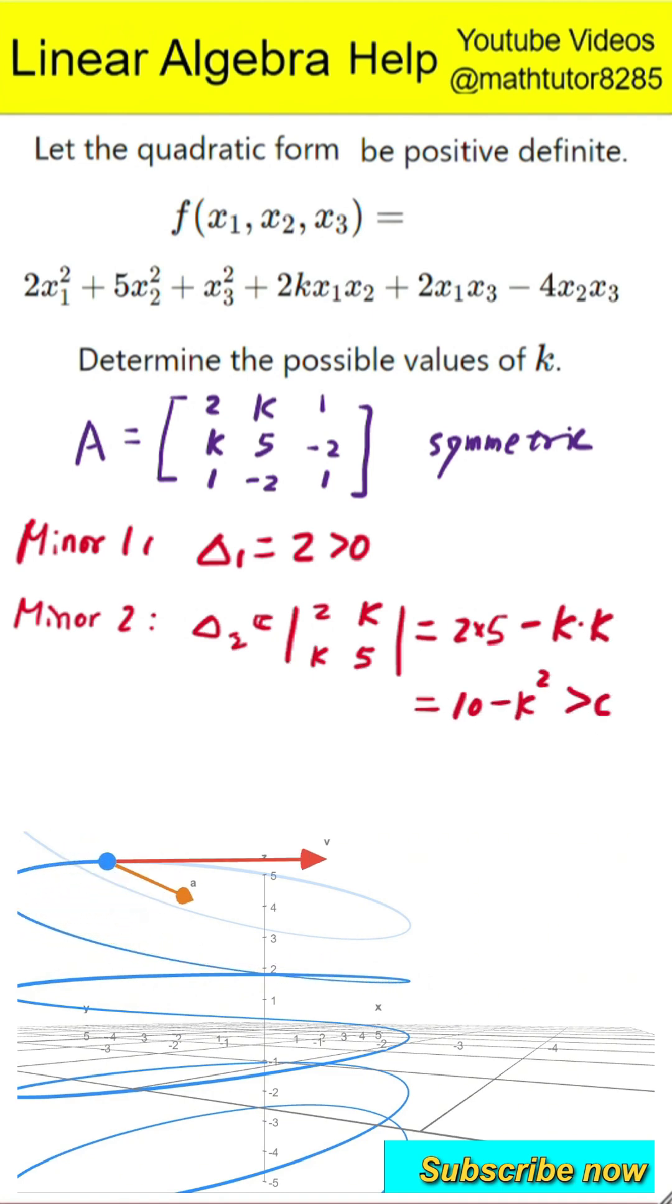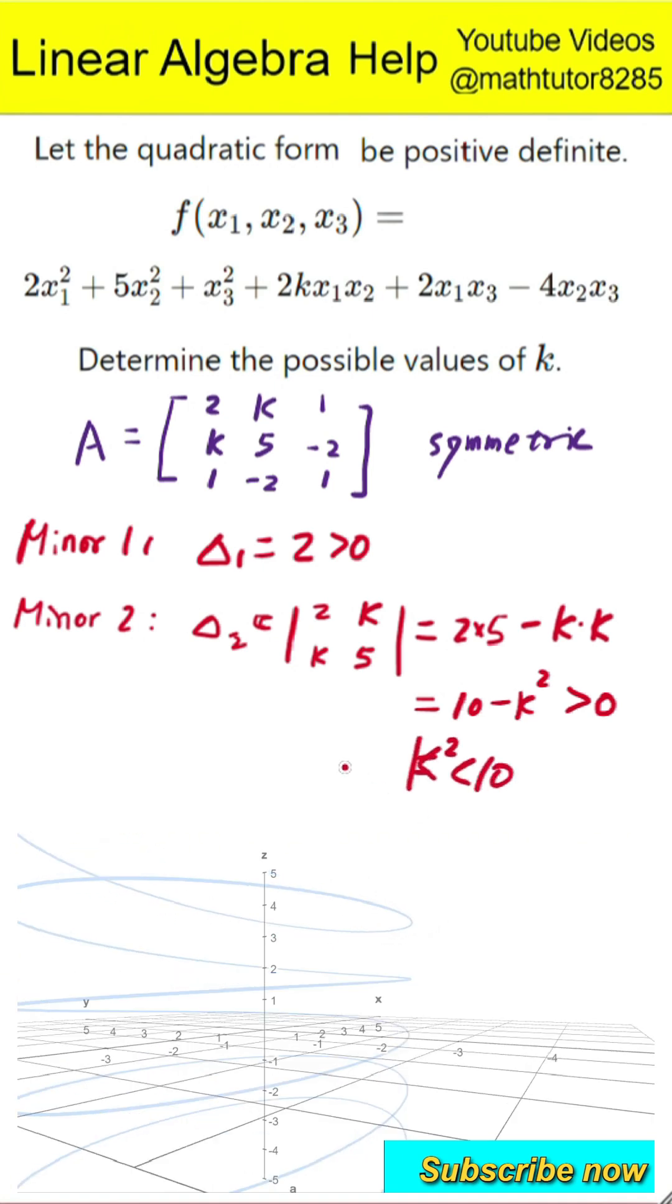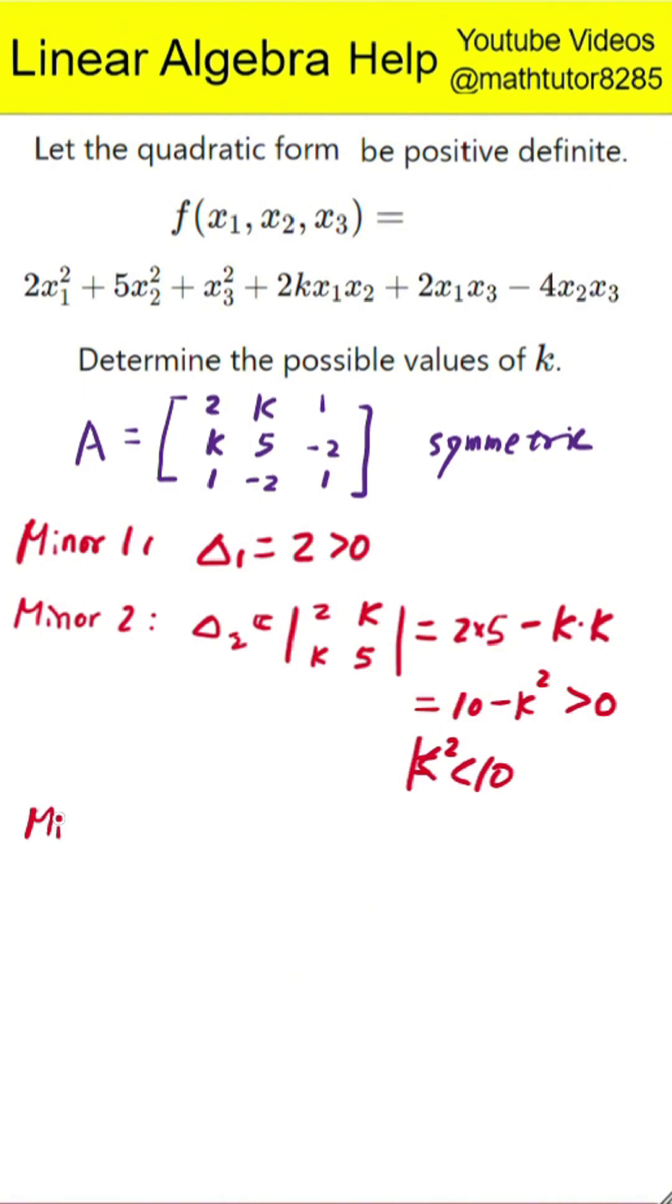This must be greater than 0. Therefore, k squared must be less than 10. This gives the condition k is between negative square root of 10 and positive square root of 10.